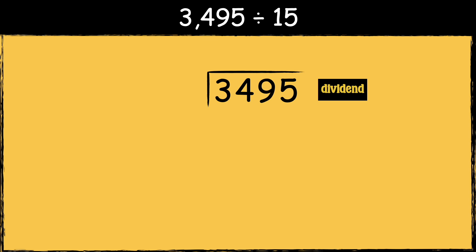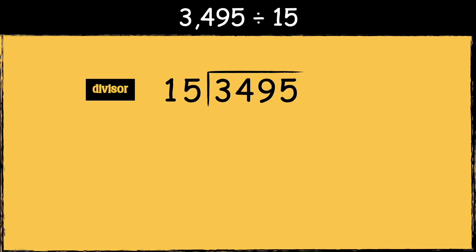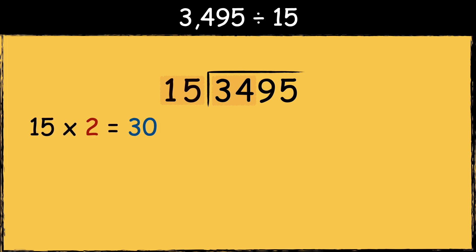Here's the next example: 3,495 divided by 15. First we need to draw the bus stop. We put the dividend inside and the divisor next to it. We need to see how many times 15 goes into 3. As we can't do this, we need to chunk the first two numbers. How many 15s go into 34? 15 fits into 34 twice, so 2 goes at the top. Next we find the remainder: 34 take away 30 is 4.